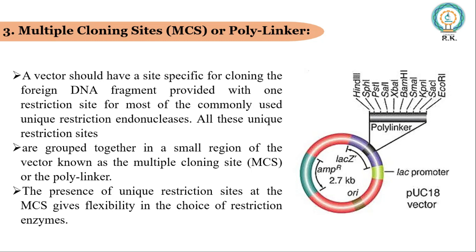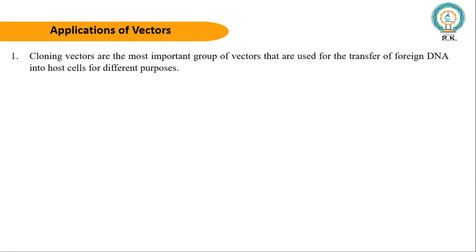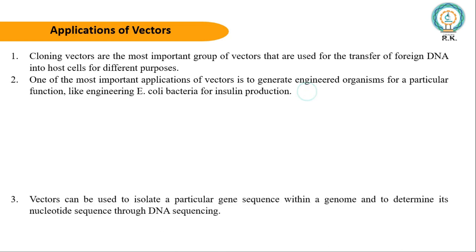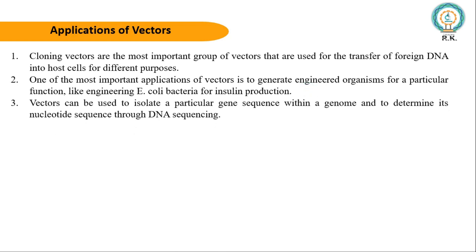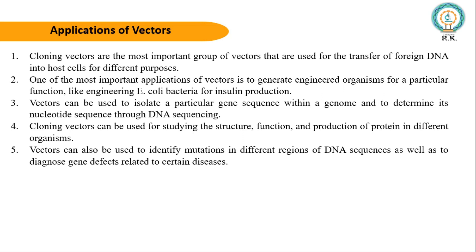Finally, the applications of vectors. Cloning vectors are the most important group used for the transfer of foreign DNA into host cells for different purposes. One of the most important applications is to generate engineered organisms for particular functions, like engineering E. coli (Escherichia coli) bacteria for insulin production. Vectors can be used to isolate a particular gene sequence within a genome and determine its nucleotide sequence through DNA sequencing. Cloning vectors can also be used for studying the structure, function, and production of proteins in different organisms, and to identify mutations in different regions of DNA sequences as well as to diagnose gene defects related to certain diseases.